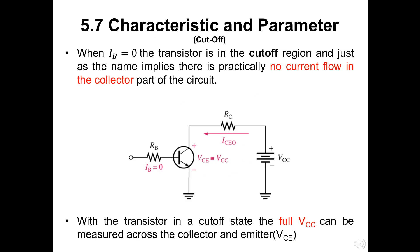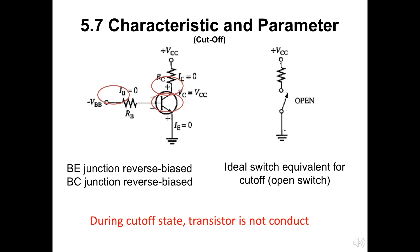Now, about the cutoff. When IB is 0, the transistor is in the cutoff region and just as the name implies there is practically no current flow in the collector part of the circuit. However, with the transistor in a cutoff state, the full VCC can be measured across the collector and emitter as VCE. Here we have two figures describing the cutoff state for a transistor. On the left hand side, BE and BC junction are both reversed biased, while on the right hand side shows the ideal switch equal to this cutoff, which is the open switch network.